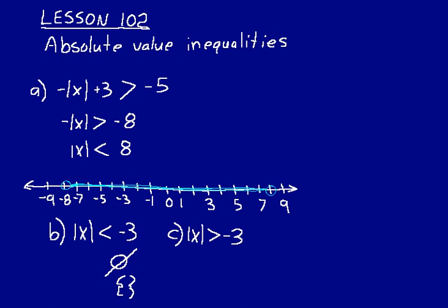Now try this one. Practice problem C. Absolute value of x is greater than negative 3. Well, the absolute value of any number is going to be greater than or equal to 0.